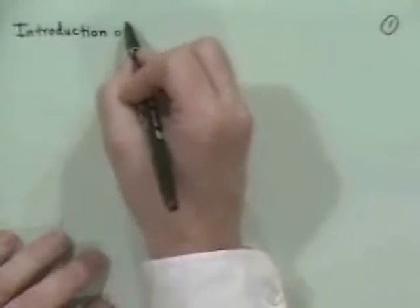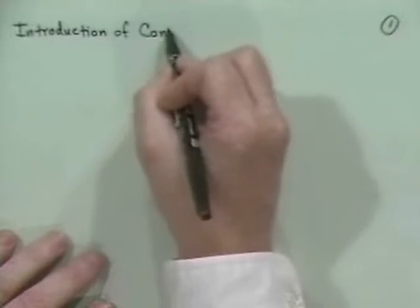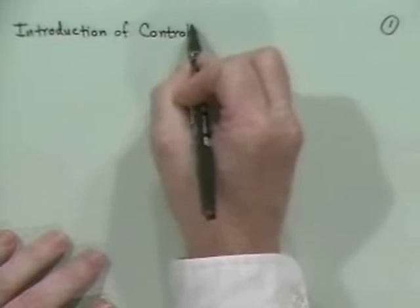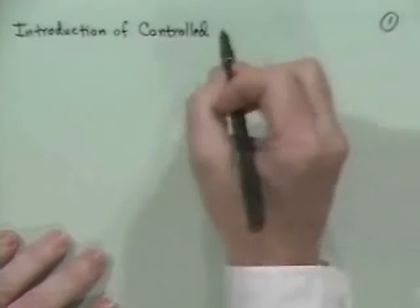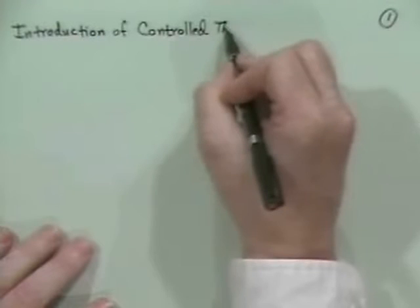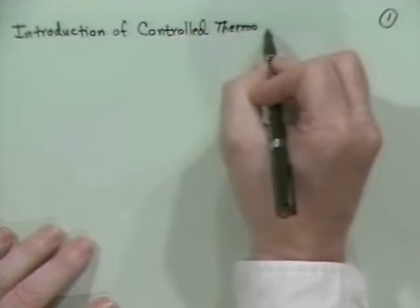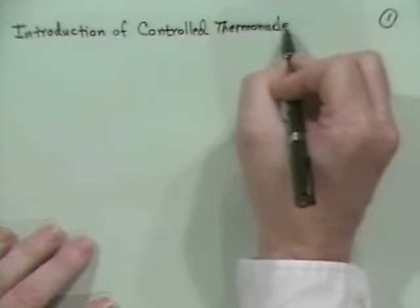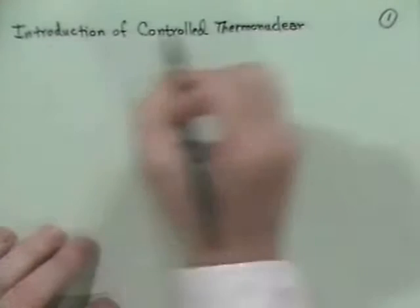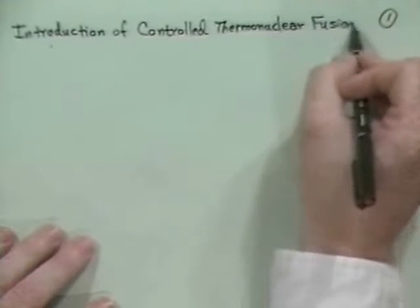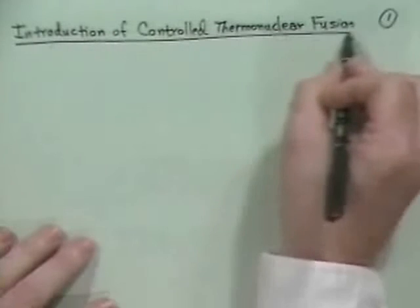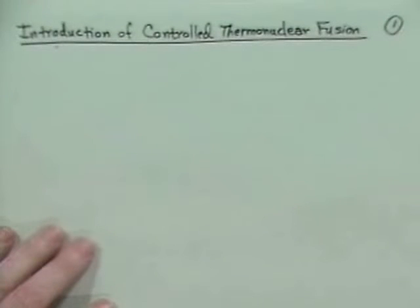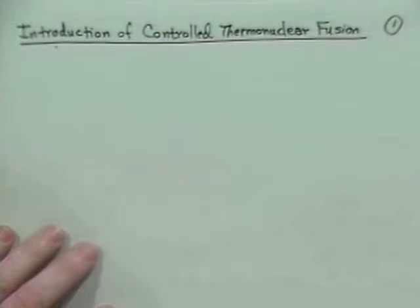Controlled fusion is a rather large subject, and I'll have to explain what some of these words really mean. We cover this more in other courses, such as 527 called Plasma Confinement and Heating, 536 called Fusion Reactor Design Considerations, and special topics courses that get taught from time to time.